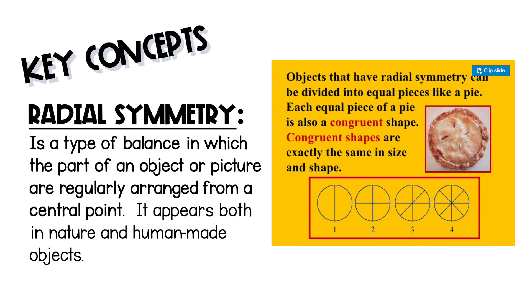For instance, objects that have radial symmetry can be divided into equal pieces, like a pie or pizza. Each piece is congruent, meaning each one is exactly the same in size and shape.